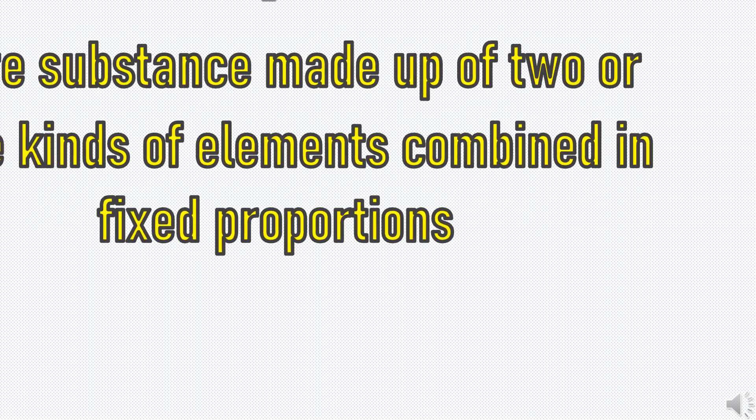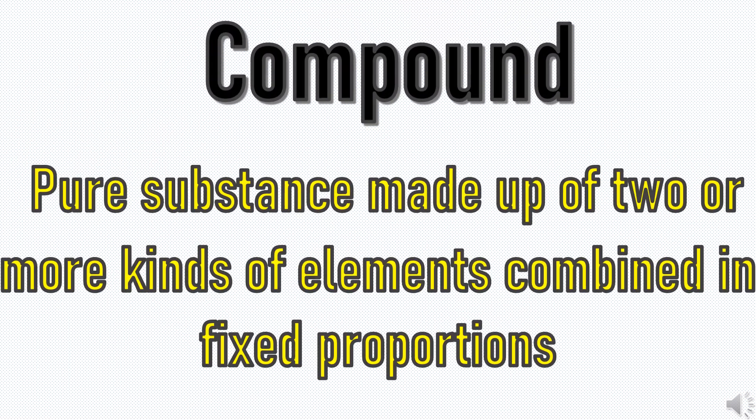Please pause the video, write the definition of the term on screen, then play it to check. Trying first helps you learn better. Compound is a pure substance made up of two or more kinds of elements combined in fixed proportions.